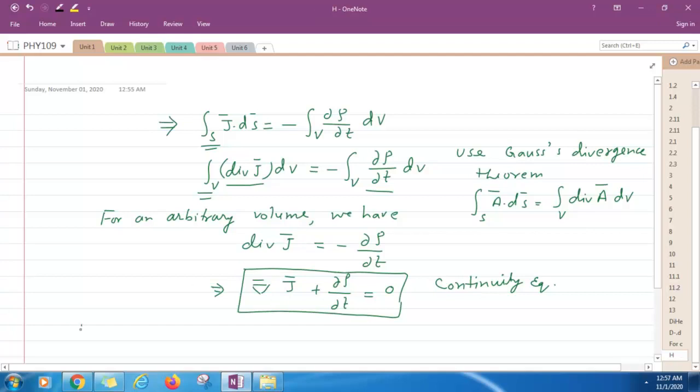Now for a stationary current, what will be this form? For a stationary current, this curly rho by curly t is 0. Then this equation will have this form: del dot J is equal to 0. This equation means there is no net output flux of current density.